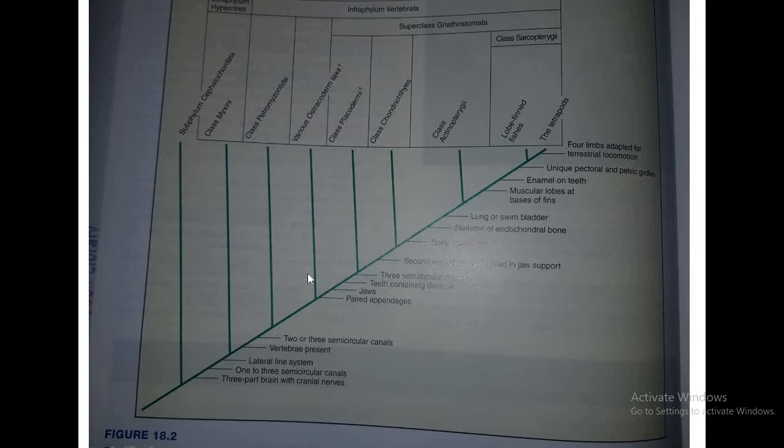All that was related to the classification of fishes, but now this is the cladogram showing the evolution of fishes. There is subphylum Cephalochordata which includes class Myxini, class Petromyzontida, then infraphylum Vertebrata came, starting from Gnathostomes.